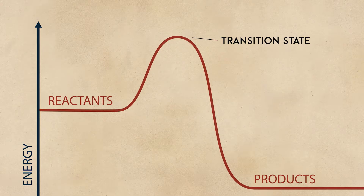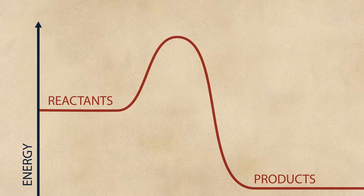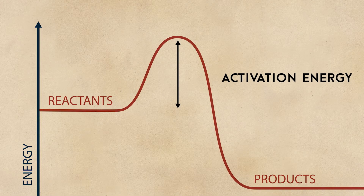Collision rates aren't the only factor at play. Many reactions must get enough energy to reach what is known as the transition state before a reaction can begin. For example, there are sometimes bonds that need to be broken before a reaction can take place, and a certain amount of energy known as activation energy is required to do that. Until this amount of energy is reached, a reaction cannot happen.